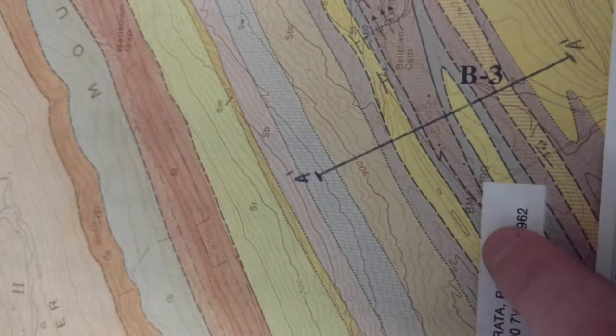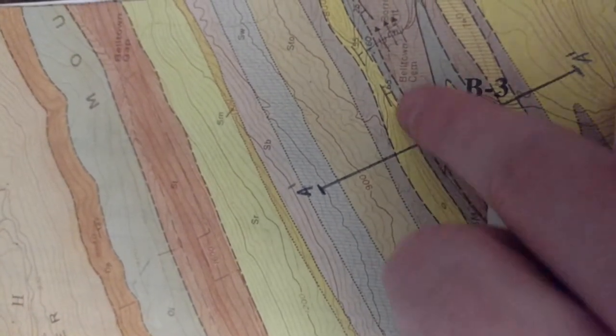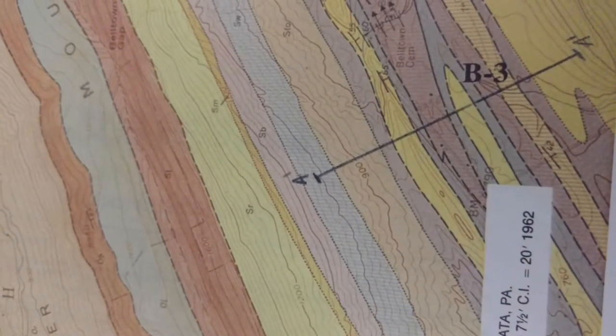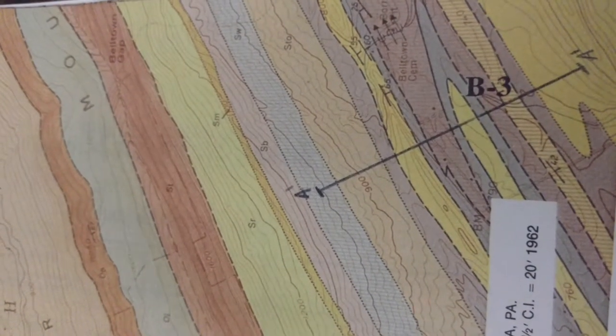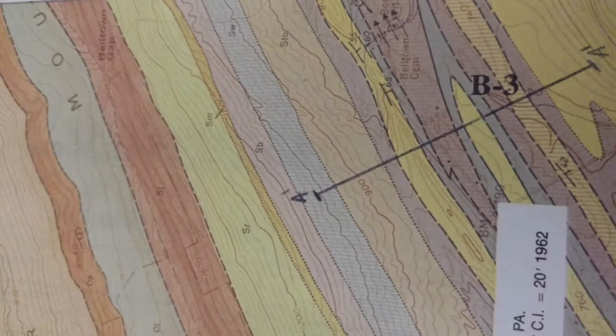And you can see there's kind of this idea of these curving loops and that's a sign that you might be dealing with like a syncline-anticline formation and so you should just keep that in mind going forward.